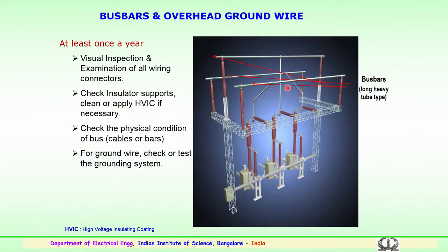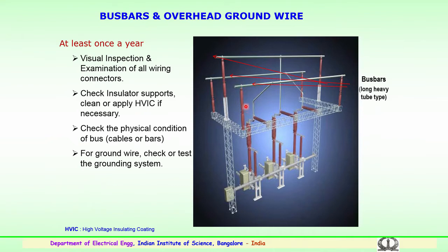Bus bars are long heavy tubular structures in any substation — these bus bars are overhead structures. At least once a year, a visible inspection is to be carried out at regular intervals, examining all the wiring connections connected to the bus bar and the end connections. It has to be properly checked whether the insulator supports — which may be of pedestal or long rod type — have contamination or deposits on the insulator surface, which have to be cleaned at regular intervals. If necessary, a suitable high voltage insulating coating has to be applied.